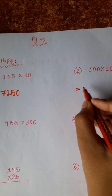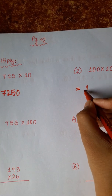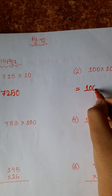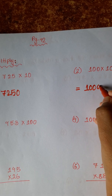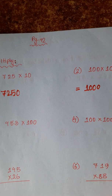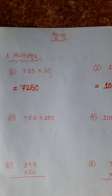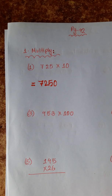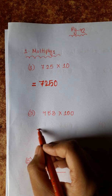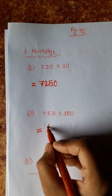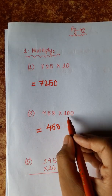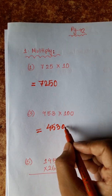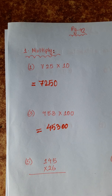Similarly, you should write this. Then that will bring it up: 4, 5, 3, 0, 0.